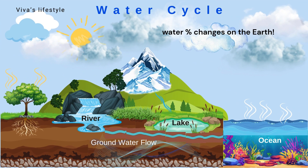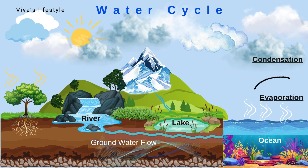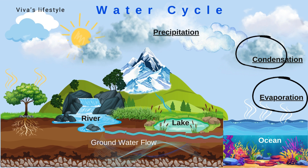As Earth's mass remains constant, the water percentage changes depending on the season. The water cycle consists mainly of three steps: evaporation, condensation, and precipitation.